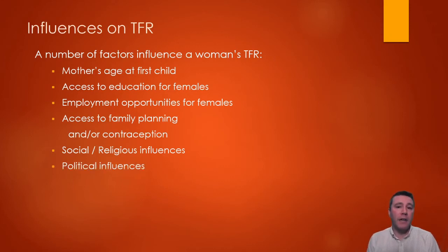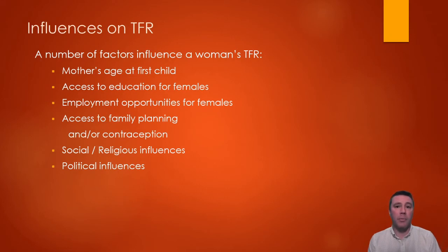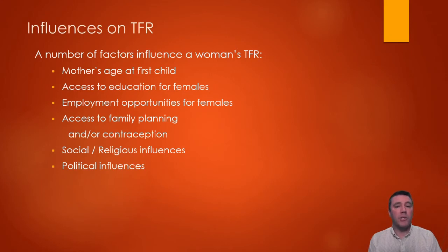Government policies can also be effective in either encouraging or discouraging having children, and there are numerous examples of such policies. Beginning in the late 1960s, Romania had a number of very aggressive policies to encourage childbearing — abortion and contraception were banned, mandatory pregnancy tests were conducted, and taxes and legal discrimination on childless people were imposed. To discourage having children and slow population growth, perhaps the most famous example is China's one-child policy, in effect from 1978 to 2015, with approximately 400 million births prevented according to Chinese government estimates.